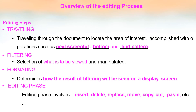The first editing step is traveling, which means going through the entire document to find the area of interest. This can be done using operations like next screen, going to the bottom, or finding a particular pattern. The second step is filtering — selecting what is to be viewed on the screen. The third step is formatting, which determines how the filtered result will appear on the display screen.